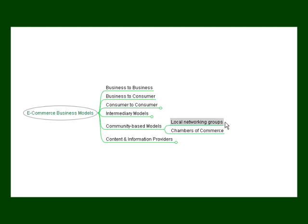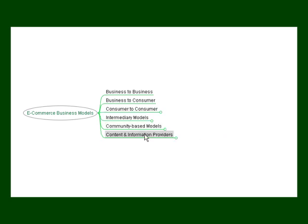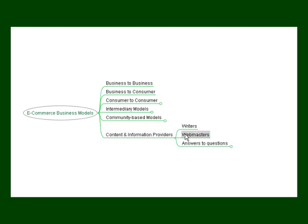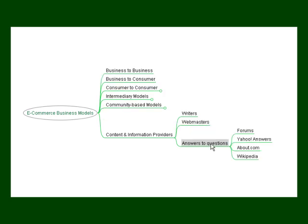Local networking groups and local chambers of commerce fall into this category. Then there are content and information providers. These include writers and webmasters, as well as people who answer questions on sites like forum sites, Yahoo Answers, About.com, and Wikipedia. This is where you go for answers to specific questions on any topic at all.